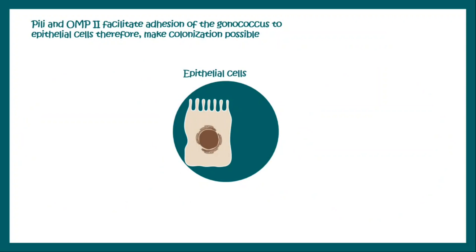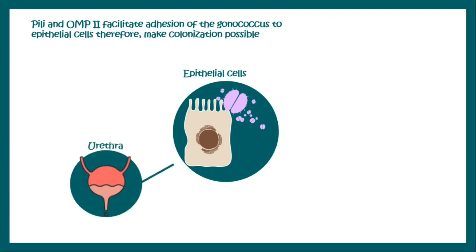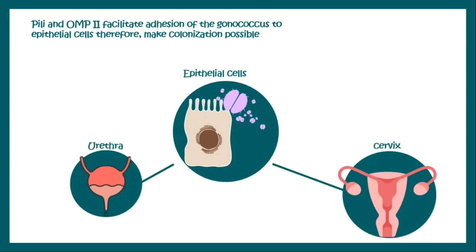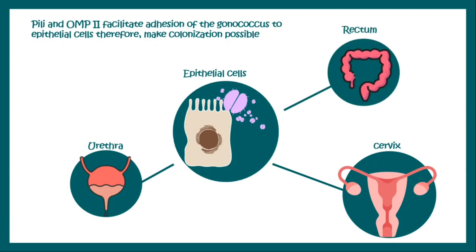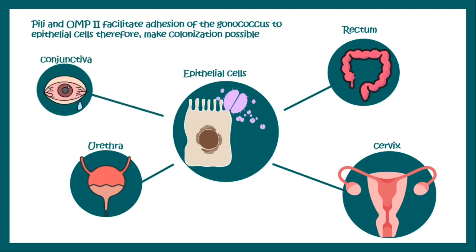The pili and outer membrane proteins facilitate the adhesion of the gonococcus to epithelial cells, making colonization possible. They colonize the urethra causing urethritis, the cervix causing cervicitis, the rectum causing anorectal gonorrhea, and sometimes the conjunctiva, leading to conjunctival gonorrhea and in newborns, ophthalmia neonatorum.